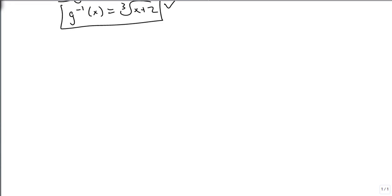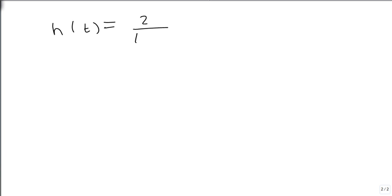One final problem. And then we'll leave this alone. Suppose that h(t), we're going to change the variables around a little bit, is equal to 2 over t minus 1. Well, we still start the same way. We're going to let y equal 2 over t minus 1. And we're going to swap the y and the t. So we're going to let t equal 2 over y minus 1.